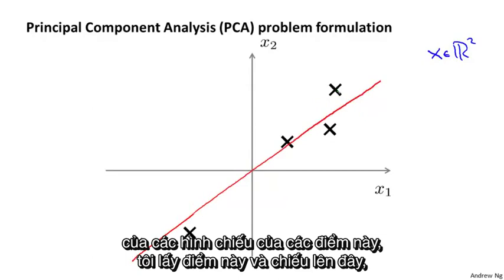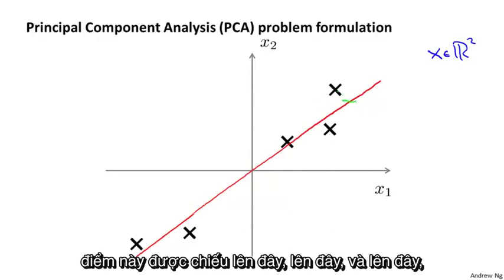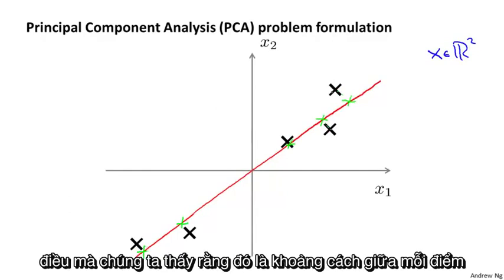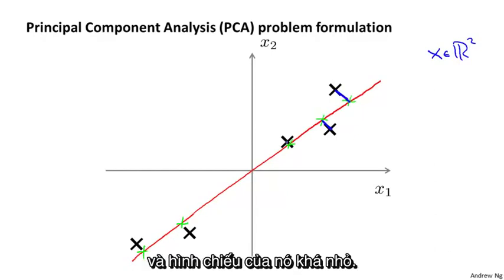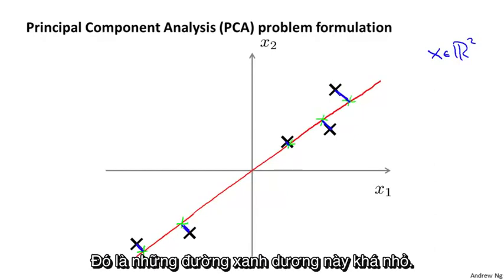I take this point and project it down here, this point is projected here, to here, to here. What we find is that the distance between each point and the projected version is pretty small — these blue line segments are pretty short.